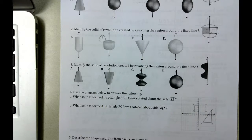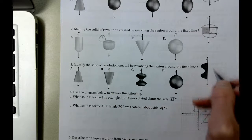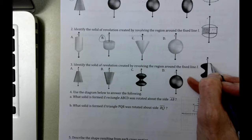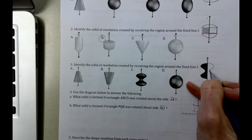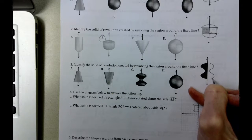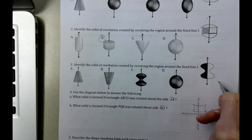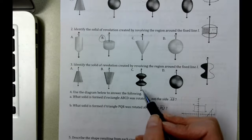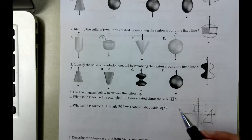Letter three, or number three, you could probably figure out the solid of revolution created by revolving the region around the fixed line. Once again, we can kind of do this. I'm not sure how to make it 3D, but it already looks like picture C right here.